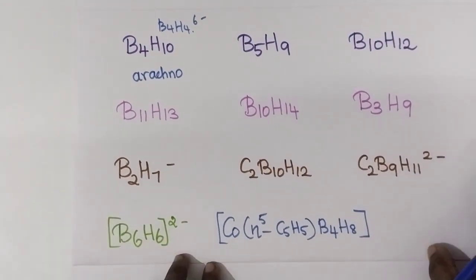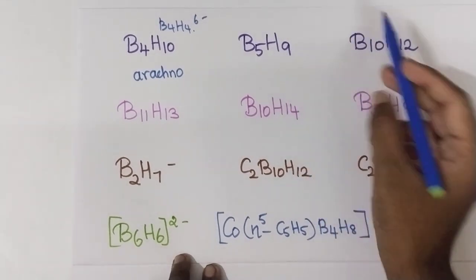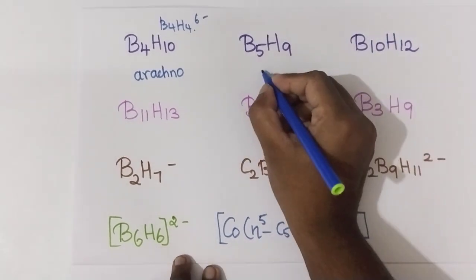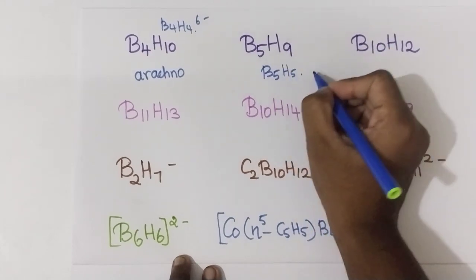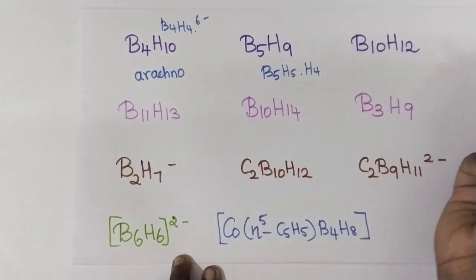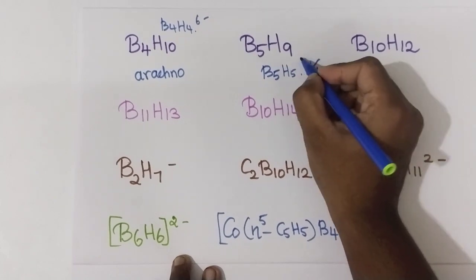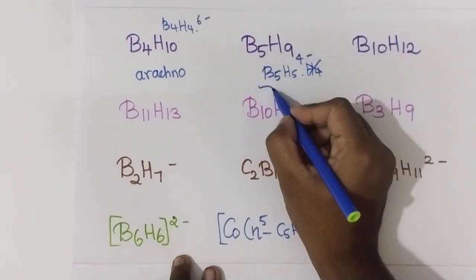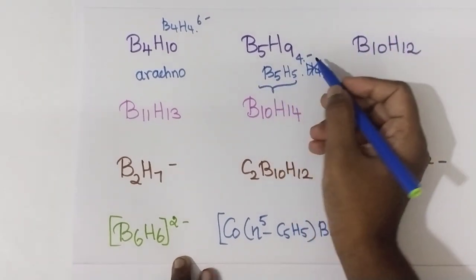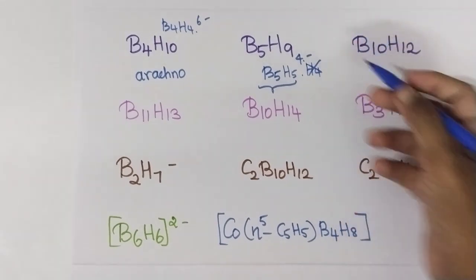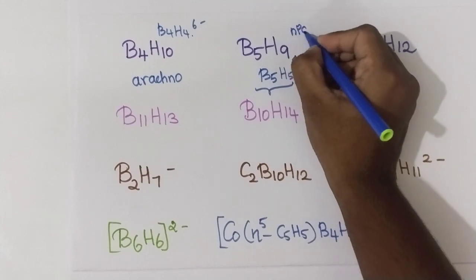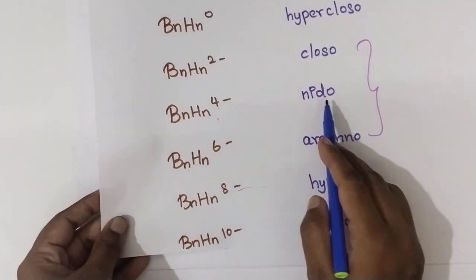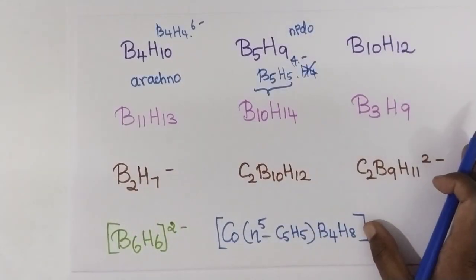Now see B5H9. B5 means H should also be 5, so B5H5. The balance will be 4 hydrogens, so you can write this as 4 minus — B5H5 4 minus. If you have 4 minus, it is nido borane.